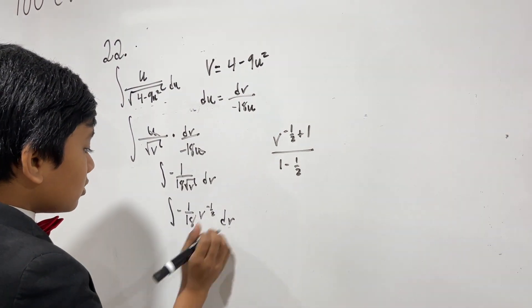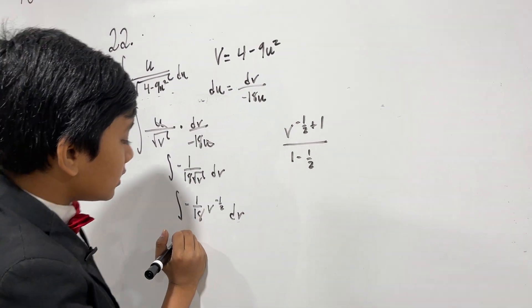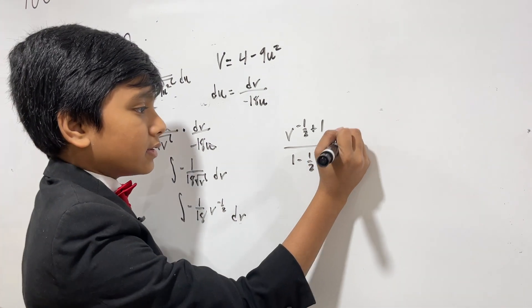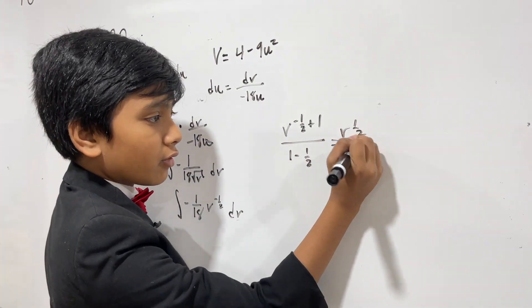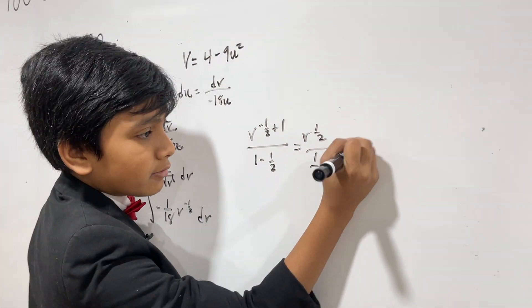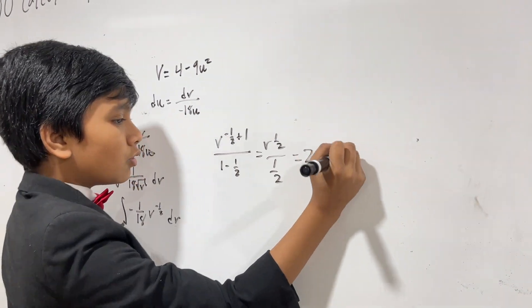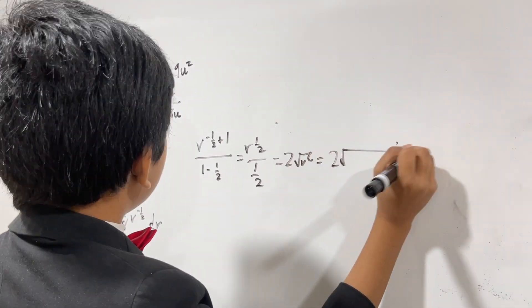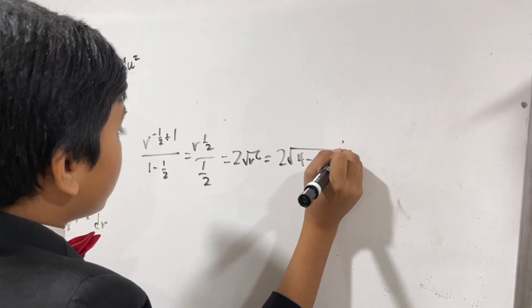So, now, what is this? Well, that gives us, this gives us v to the 1 half over 1 half, which can also be written as 2 root v, or, in this case, v would be 4 minus 9u squared.